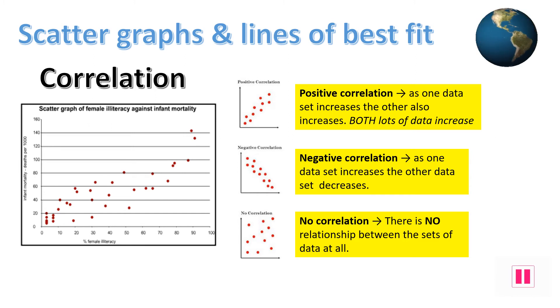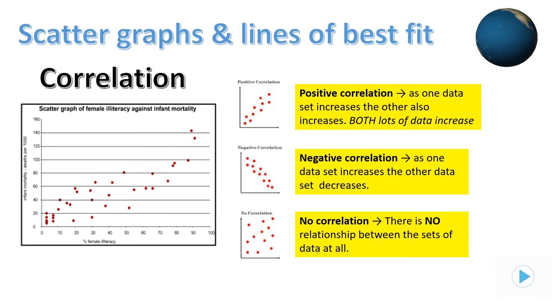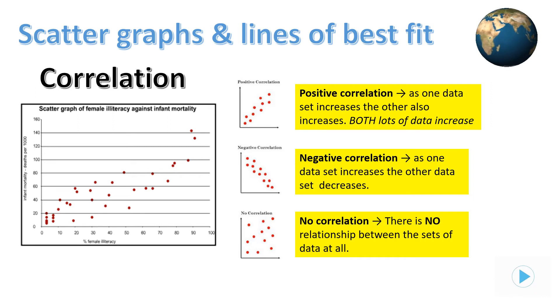A negative correlation is shown as a diagonal relationship from top left to bottom right, where as one thing increases the other decreases. The third possibility is that there is no correlation at all — this means the dots are generally all over the place so you can't see a relationship.